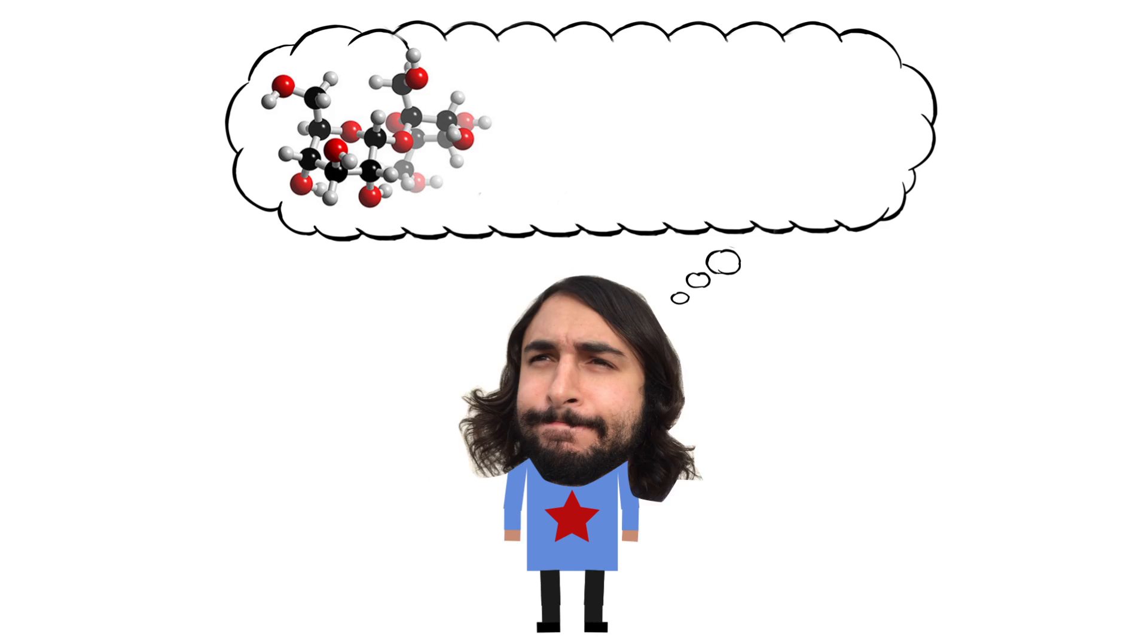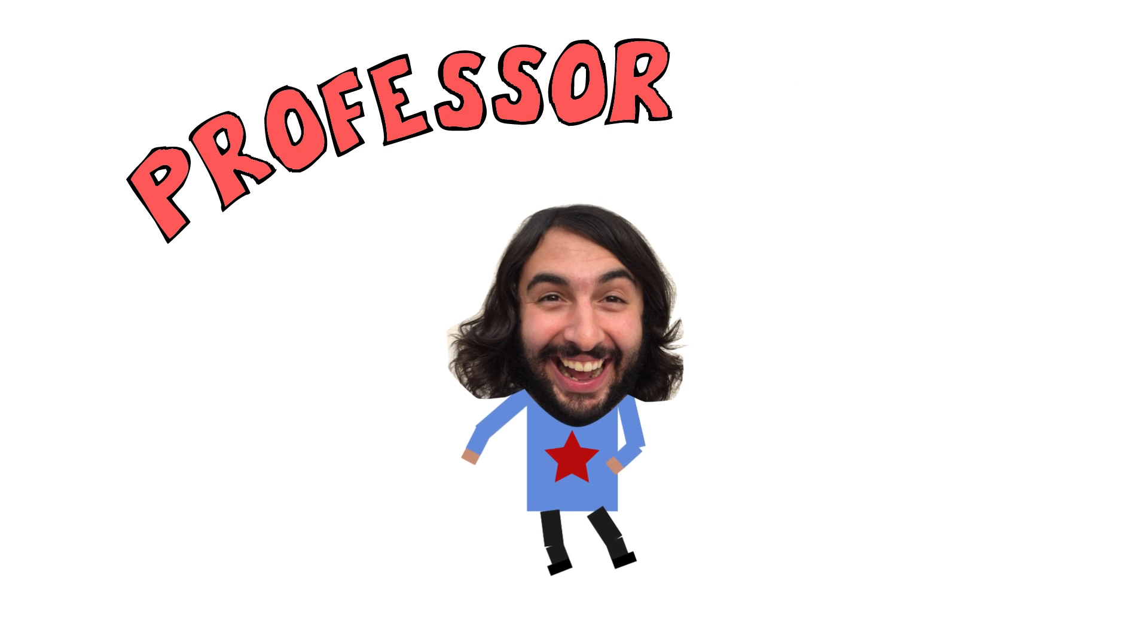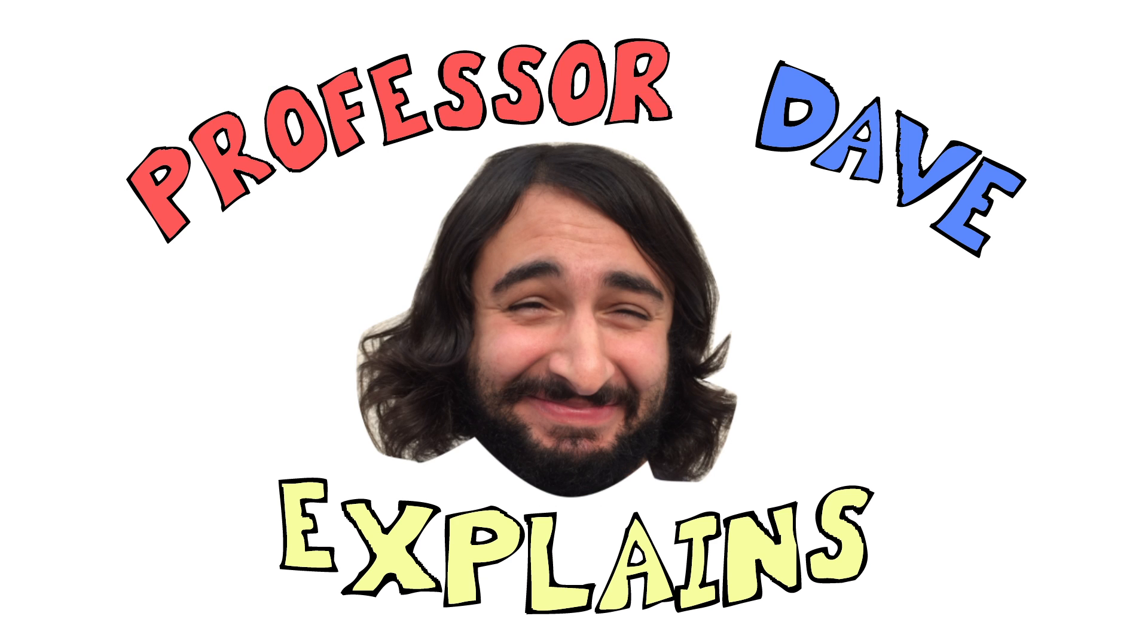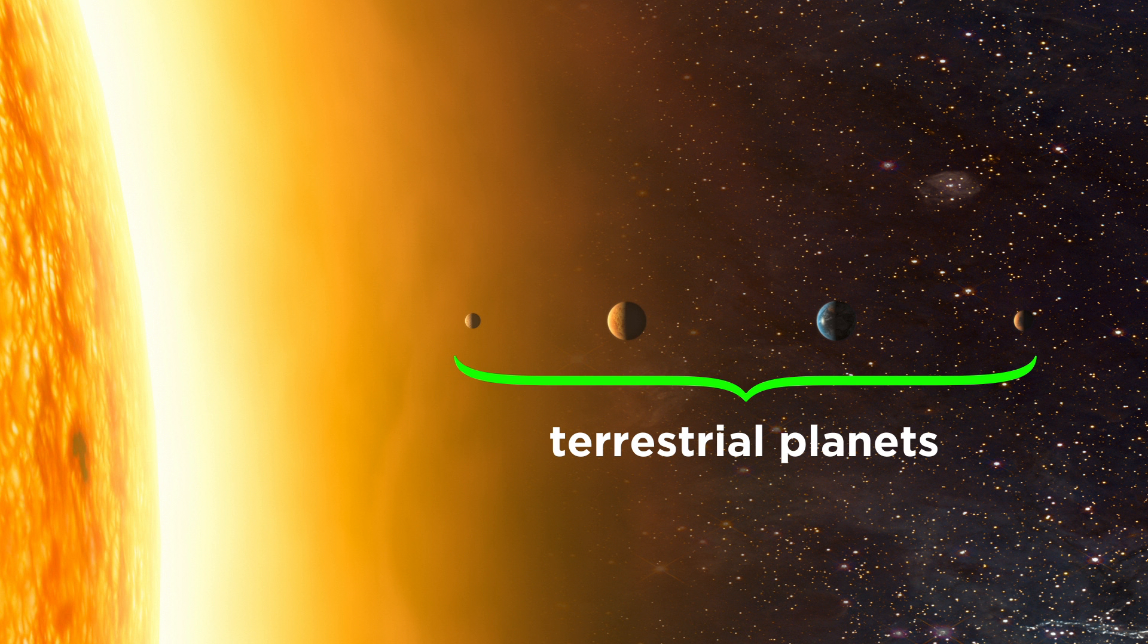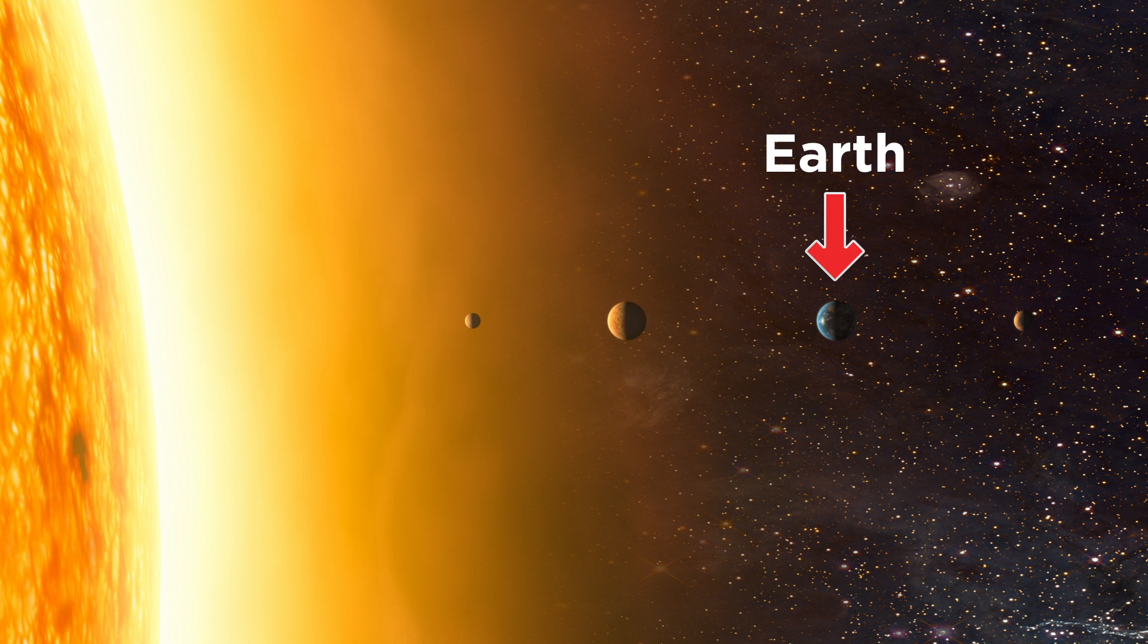Professor Dave here, let's look at the Earth. The inner planets of the solar system are terrestrial planets, which means they are rocky worlds, and the third rock from the sun is Earth, our home planet.